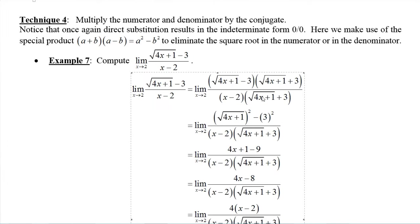That's okay as long as the conjugate is not zero, and remember x is not 2, it's only approaching 2. In the numerator, we use the sum and difference pattern: square root of 4x plus 1 squared minus 3 squared. The square root and the square cancel leaving 4x plus 1, and 3 squared is 9, so we have 4x plus 1 minus 9. In the denominator, I'll leave it factored as x minus 2 times the conjugate — it's easier not to expand.